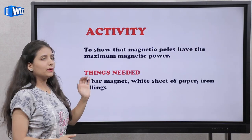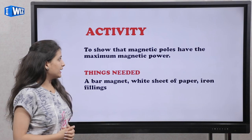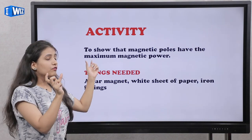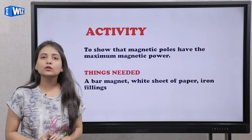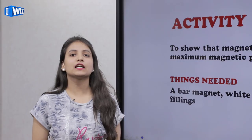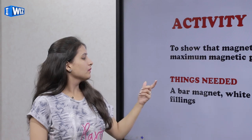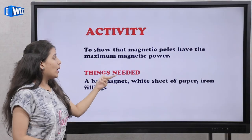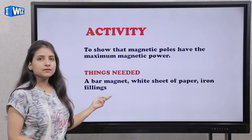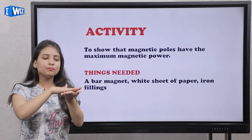Now we are going to show you an activity. The magnetic poles have maximum magnetic power. The things required are: a bar magnet, a white sheet of paper, and iron filings.